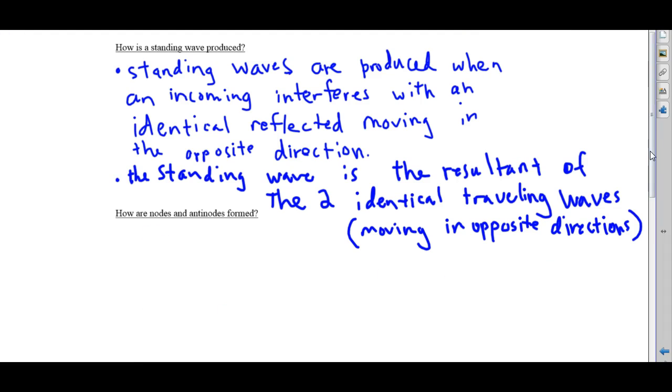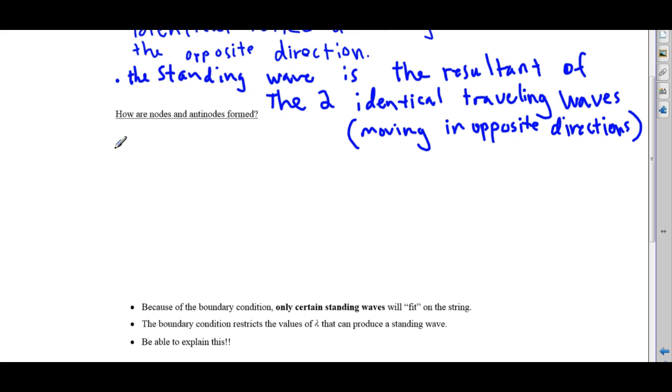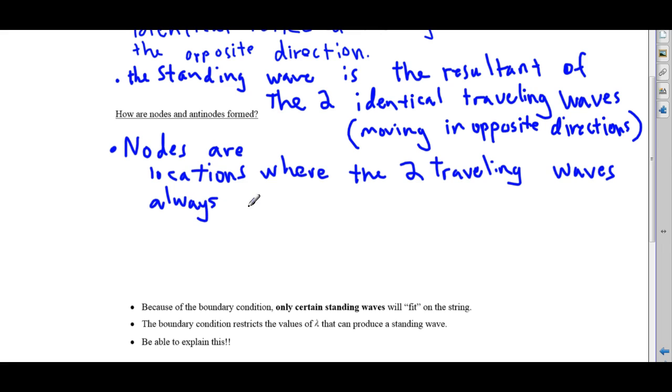Let's make a note of that in our notes. How are antinodes and nodes formed? Nodes are locations where the two traveling waves always interfere destructively, which means that's where they always cancel. They cancel out.